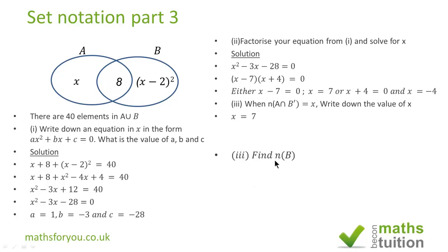And it says find the number of elements n in set B. Now we know that in purely set A we got 7 elements in A on its own. And because A union B is 40, 40 minus 7 is 33. Or we could do n = (7 - 2)² + 8 which is 25 plus 8 equals 33. And if you add 33 and 7 you get 40.